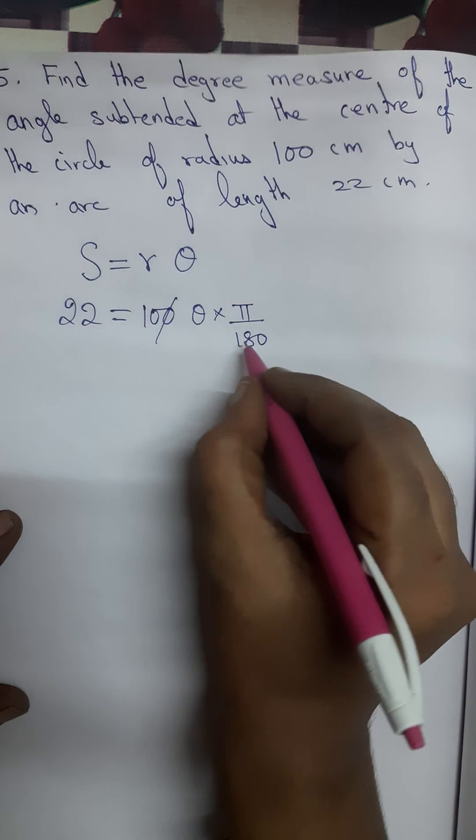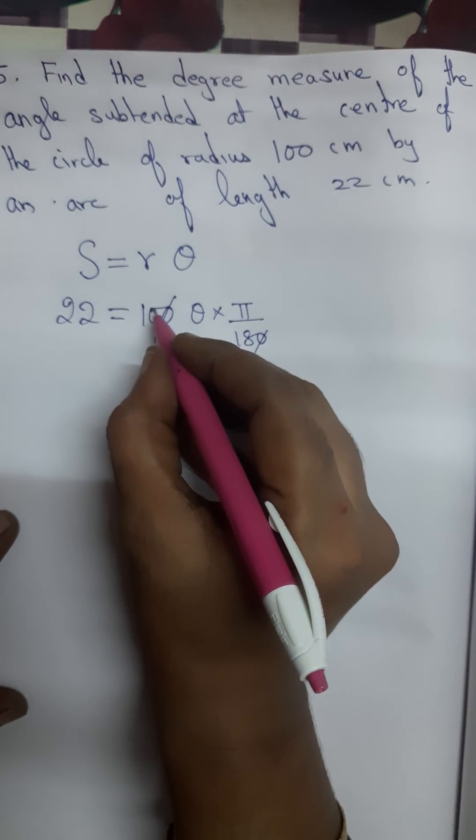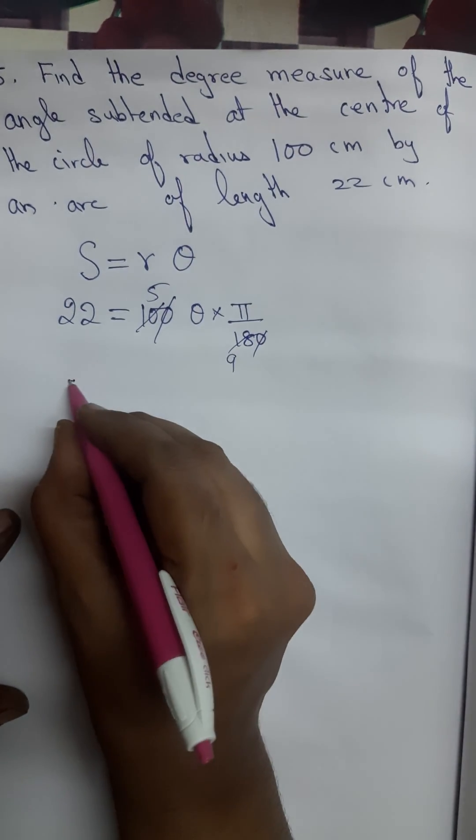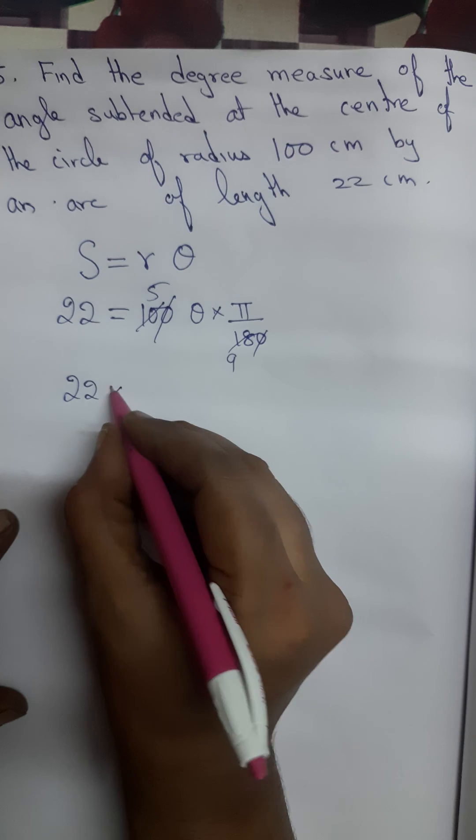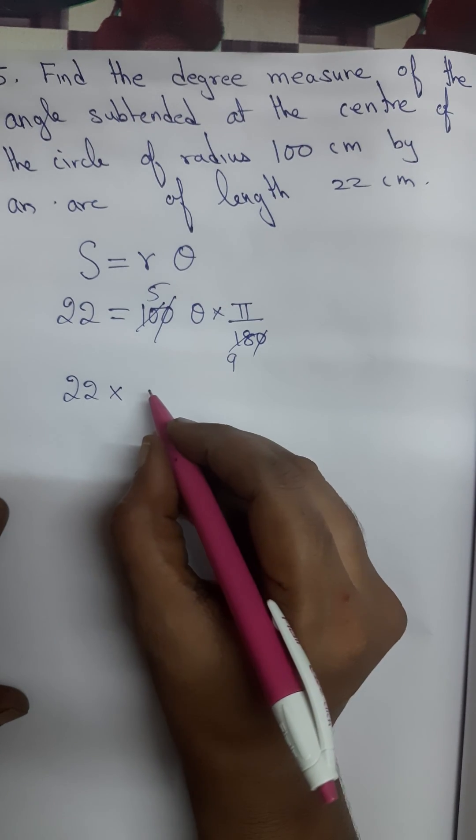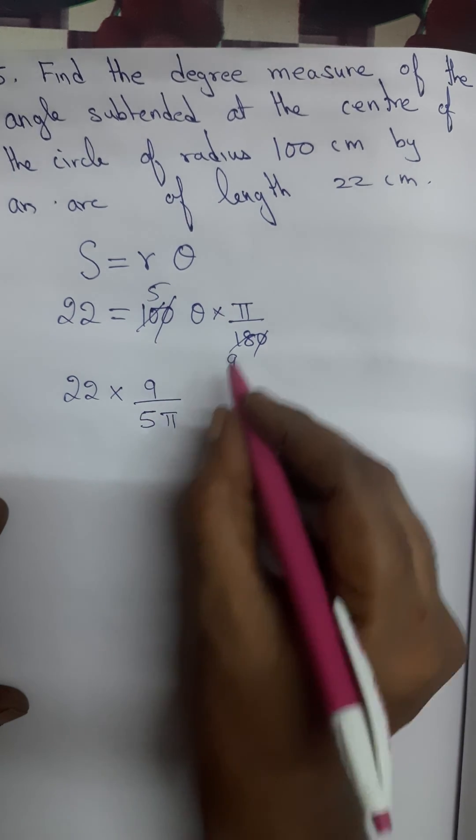You can see this 0 and this 0 gets cancelled, I can reduce this 10 and 18 by 2 tables, 2 5s are 2 9s. We will have 22 into this 5 and 9, if I take to the other side, it should become reciprocal. I will have 9 by 5 pi.